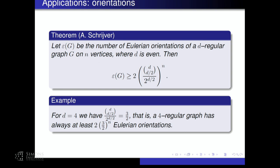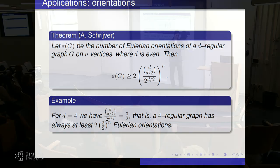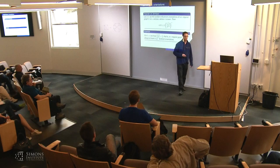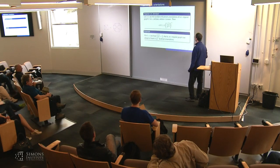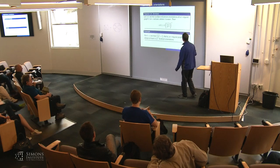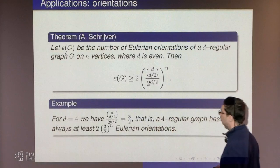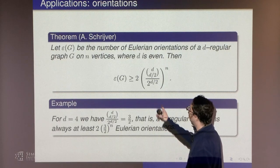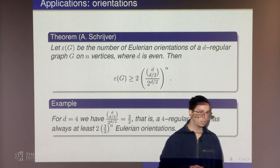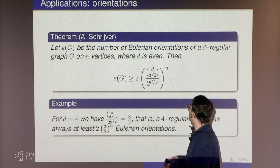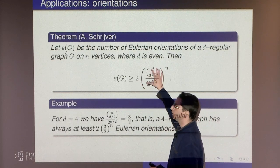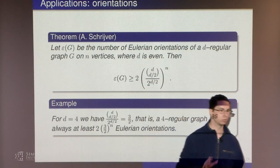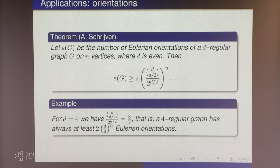In the original theorem there was no factor of 2, but I put it in because we will get it for free. This bound is in some sense quite tight. If you consider a random d-regular graph, then you get a constant times square root N times this exponential. So it's tight up to a constant times square root N.